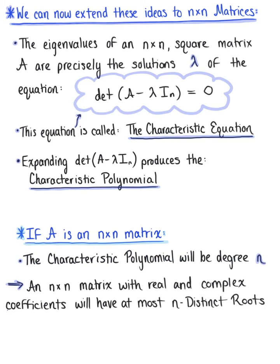An n by n matrix with real and complex coefficients will have at most n distinct roots, in other words, n distinct eigenvalues.